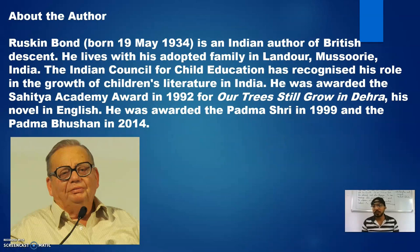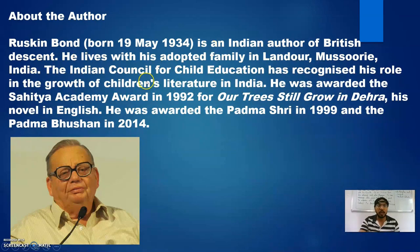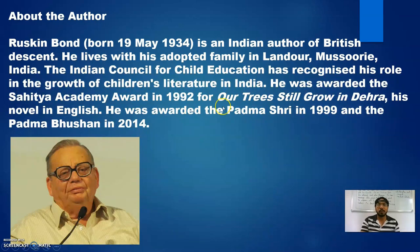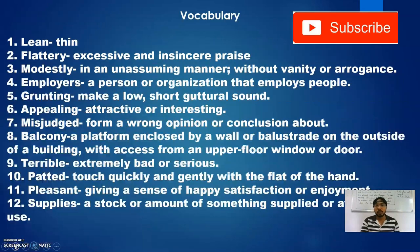One of my favorite authors has written this chapter — Sir Ruskin Bond. Born 19th May 1934, he is an Indian author of British descent. He lives with an adopted family in Lansdowne, Mussoorie, India. The Indian Council for Child Education has recognized his role in the growth of children's literature in India. He is a prominent name in children's literature. He was awarded the Sahitya Akademi Award in 1992 for 'Our Trees Still Grow in the Dehra,' his novel in English. He was awarded the Padma Shri in 1999 and the Padma Bhushan in 2014.